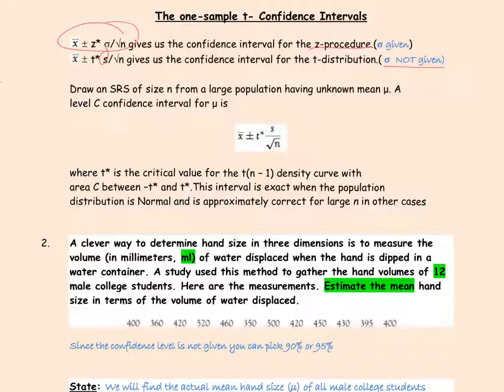So instead of z*, we're going to look for t*, and mostly everything else is the same. Sigma is not known, we use s instead of sigma, which is an approximation, and we use the t-distribution. Therefore, we use t* instead of z*. The formula is x̄ ± t* s/√n. Remember that the degrees of freedom is one less than the sample size.